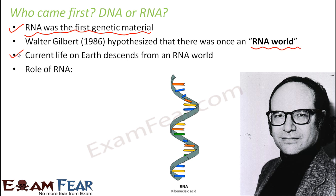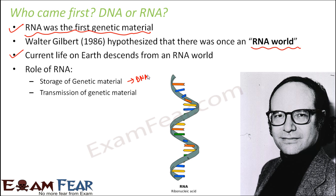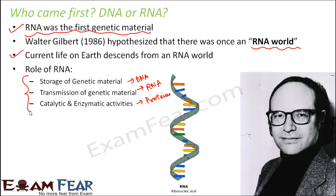During the RNA world, RNA was being used for storage of genetic material — a role today performed by DNA. It was also used for transmission of genetic material — a role today still performed by RNA. It was also used for catalytic and enzymatic activities — roles today performed by proteins. In those days, RNA took over all the functions of DNA, RNA, as well as proteins, and that is why it was known as the RNA world.